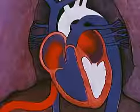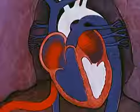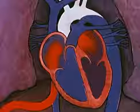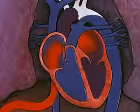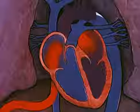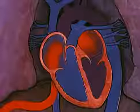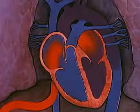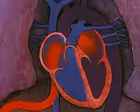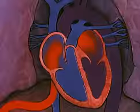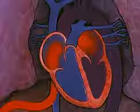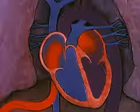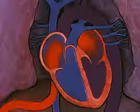This mixture of venous and oxygenated blood enters the left ventricle and is pumped into the aorta, from which the carotid arteries arise to supply the brain. Through the descending aorta, partially oxygenated blood is distributed to the lower portions of the body. This circulatory pattern persists throughout the remainder of fetal development.